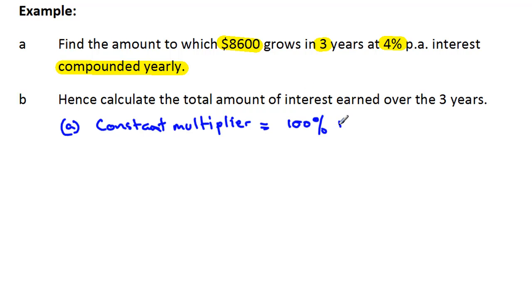which turns out to be 104%. Now converting this to our multiplier, we take our 104 and divide it by 100, that's converting it into a decimal, a percentage to a decimal, and we get our constant multiplier of 1.04.